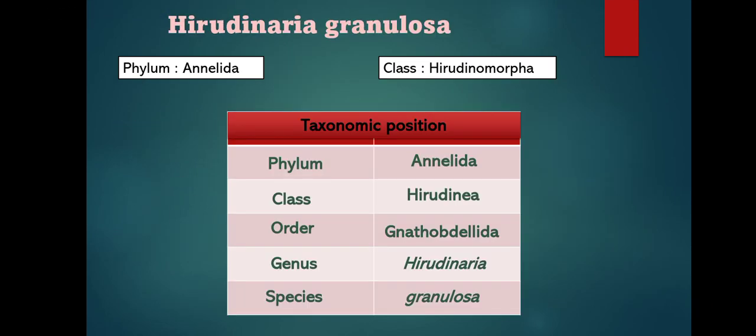Hirudinaria granulosa is an example of Hirudinia. Its taxonomic position: phylum Annelida, class Hirudinia, order Natopdelida, genus Hirudinaria, species granulosa.